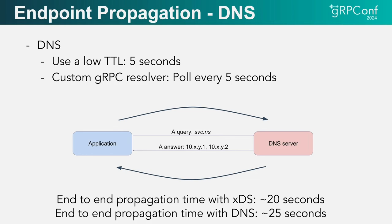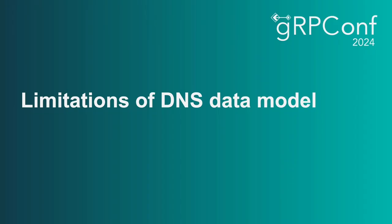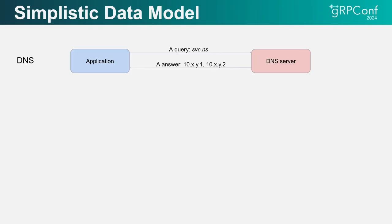I'm mentioning this because when I talk with folks that are looking at implementing XDS, I often hear faster propagation time cited as an advantage. In our case, that wasn't really a key benefit. The real benefits of using XDS over DNS are the data models that XDS provides.